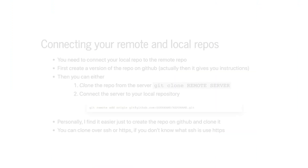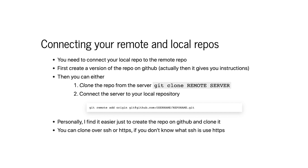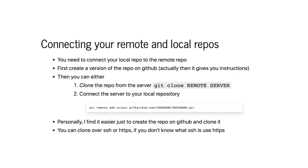We need a way to connect our local repository to our remote repository. There are two ways to do this: one is to create the local repository, then create one on GitHub and connect the two. But I find the easiest way is just to create the repository on GitHub and then clone it locally. On GitHub, I go to create repository, create a README file so it has one file in it, and then clone that repository locally.